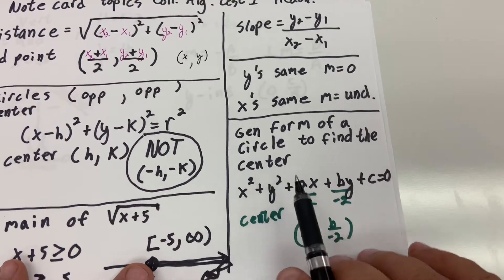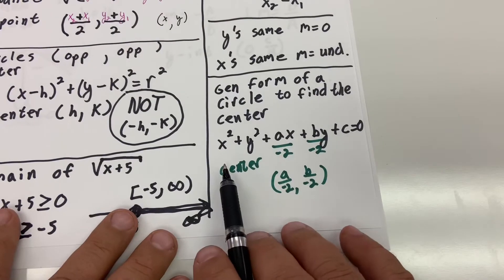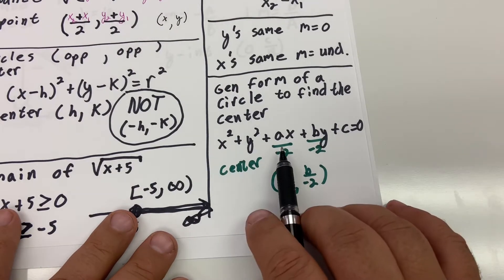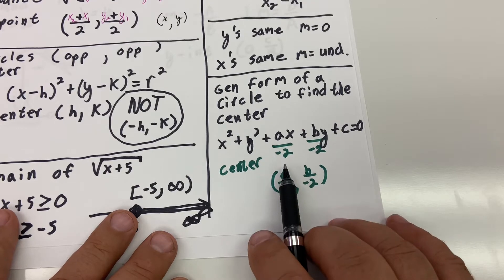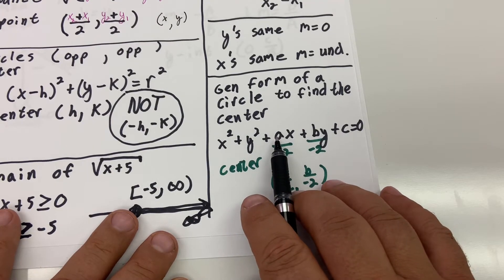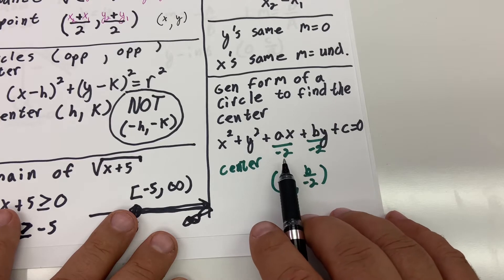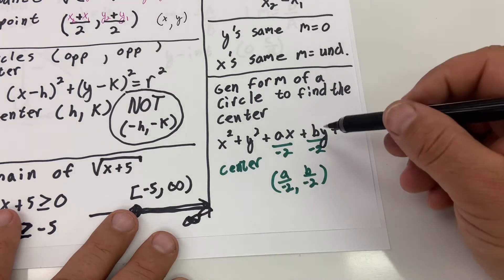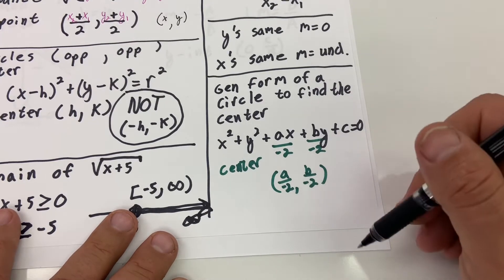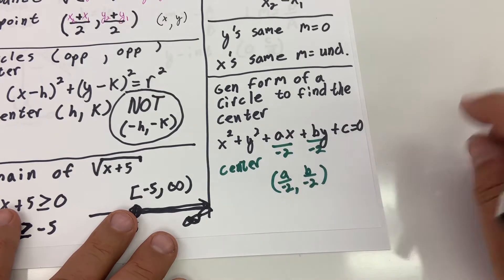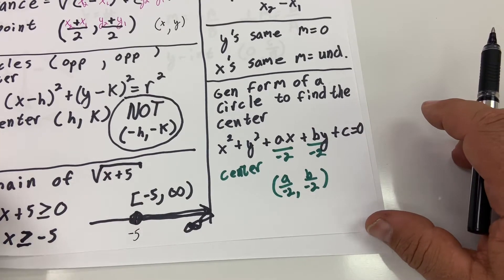General form of a circle to find the center: they give you this long drawn-out equation, and all you do is take that middle x term and divide it by negative two. So if that were like an eight there, eight divided by negative two gives negative four for the center. Then B divided by negative two — whatever's in front of that y term, not y squared, the y term — you divide that by negative two.